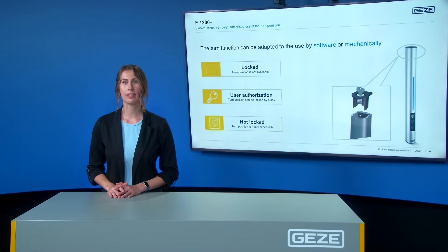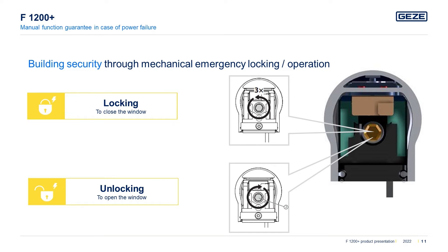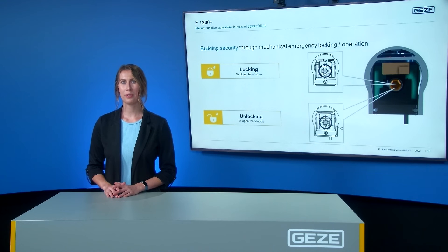If the turn position has been released and is accessible, the button is lit up. Another feature of the F1200 Plus that ensures building security in the event of a power failure is the integrated mechanical emergency locking, also known as emergency operation, designed by a screw inside the drive. Imagine a power outage — the windows are open and it's pouring rain. With the F1200 Plus, you can easily and quickly lock or close the windows with an Allen key and three turns counter-clockwise. It is also possible to unlock or open the window by turning the screw clockwise.